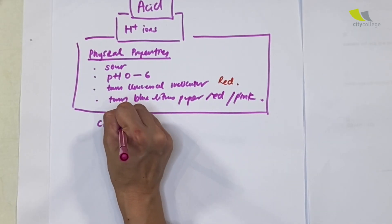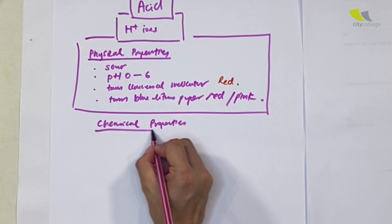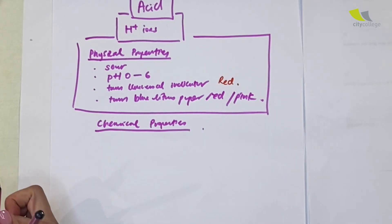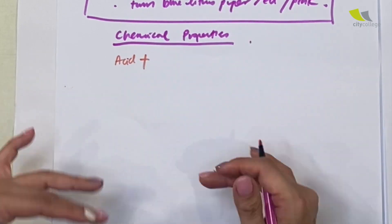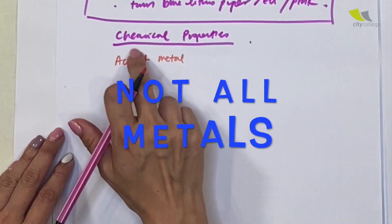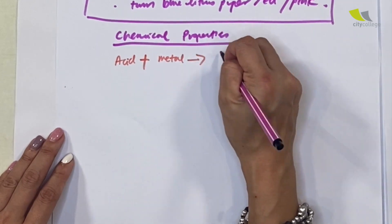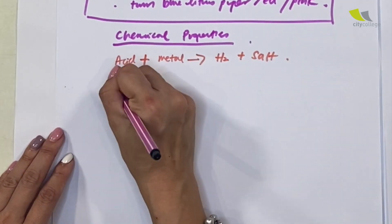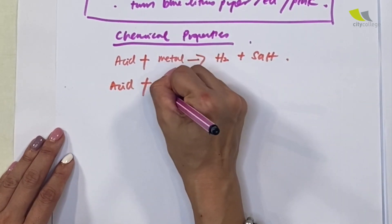Next, we need to know the chemical properties of acids. Acids can react with a lot of different kinds of substances. First, dilute acids react with some metals (not all metals) to give hydrogen gas and a salt. Next, acid plus metal carbonate produces carbon dioxide, a salt, and water.